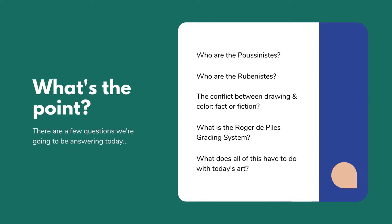So now that we've had you up, moving, and running around, and you're much more alert and awake, you're probably wondering what's the point. There are quite a few questions we're going to be answering today: Who are the Poussinists? Who are the Rubenists? Is the conflict between drawing and color fact or fiction? Who and what is the Roger de Piles grading system? And what does all this have to do with today's art?